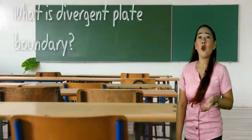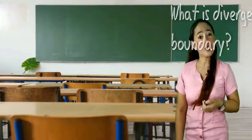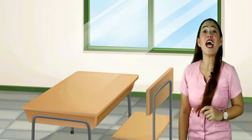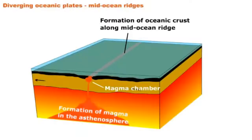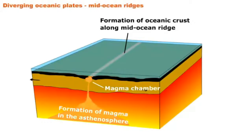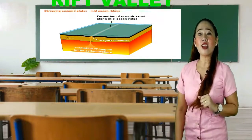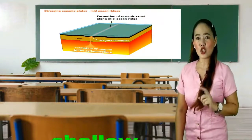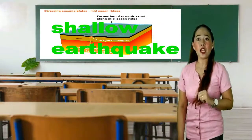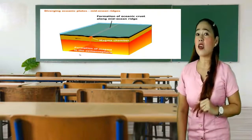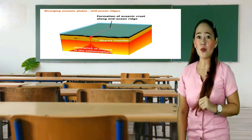Could you still recall what Divergent Plate Boundary is? Divergent Plate Boundaries mostly happen under the oceans. As plates pull away from each other, a vertical space may extend deep down into the lowest layer of the crust, creating a rift valley. The force of separation creates a tension zone, and a shallow earthquake may happen with this plate movement. Plate divergence is believed to be a slow, continuous process.